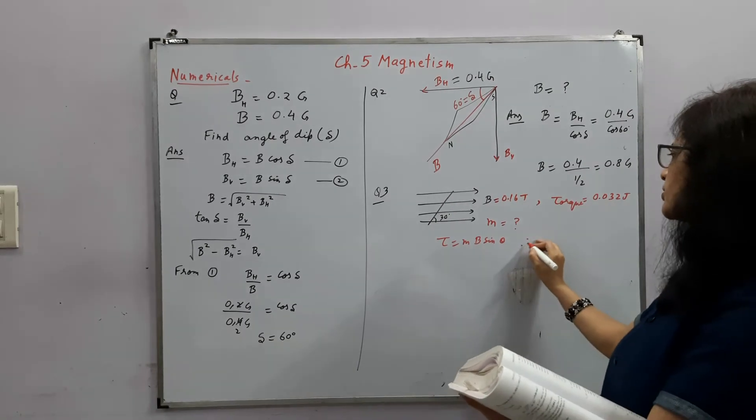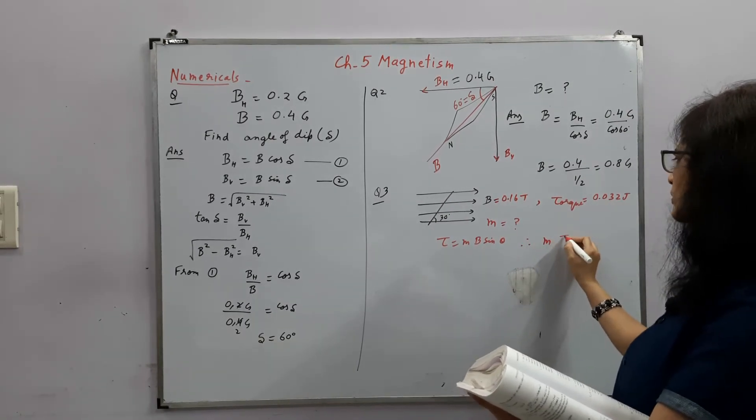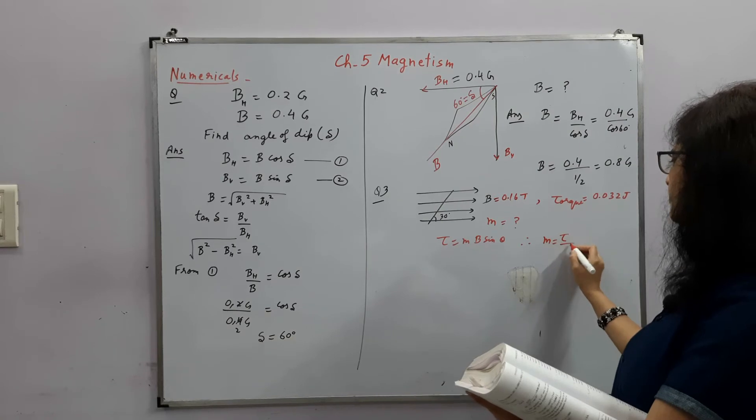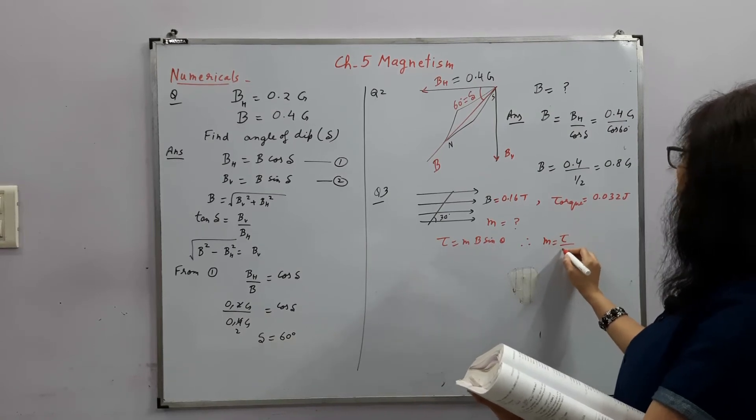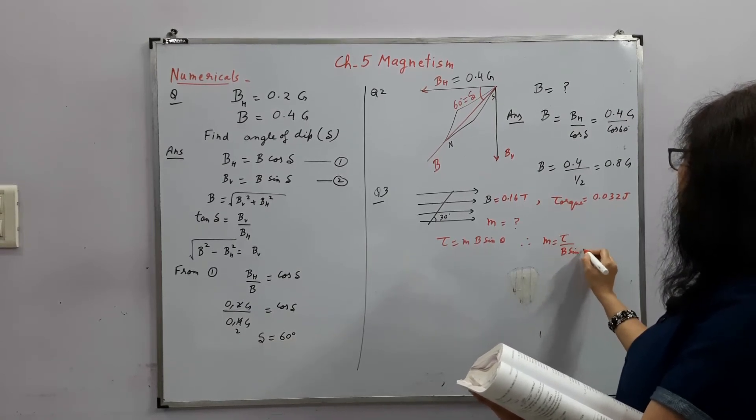Torque is equal to Mb sin theta. You can find it directly. So therefore, m will be torque upon B sin theta, right?